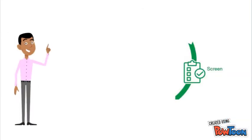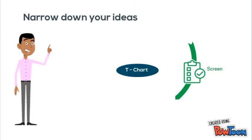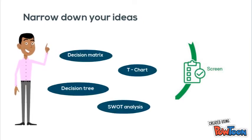Next is screen. You should now have a large list of potential ideas, perhaps too many to implement. So the next step is to narrow them down.